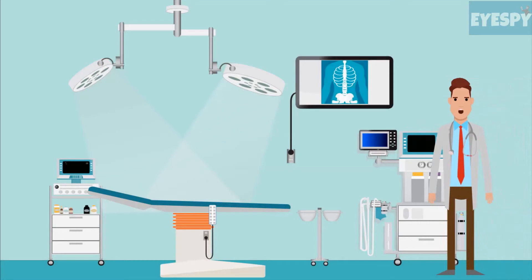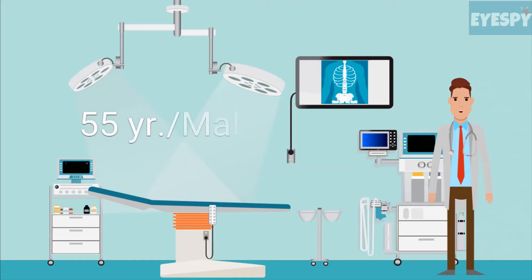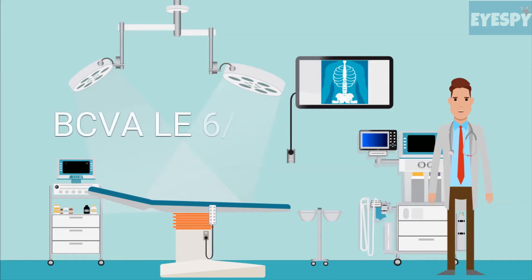With this presentation, I want to highlight the salient features of chronic central serous chorioretinopathy on multimodal imaging. The patient is a 55-year-old male and was diagnosed with CSCR in the left eye several years back. His current best corrected visual acuity in the left eye is 6/12.